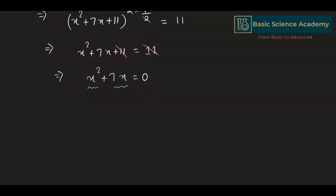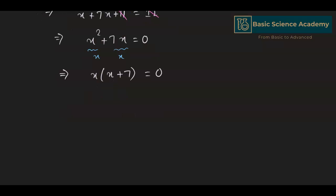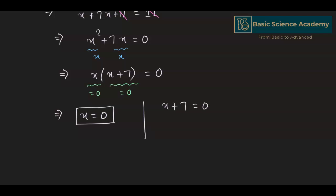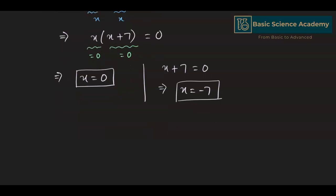Both x² and 7x have x in common. Taking x as common factor gives x(x + 7) = 0. Since the right side is 0, either x = 0 or x + 7 = 0. This gives us x = 0 as one solution, and x + 7 = 0 gives x = −7. Hence we have two values: x = 0 and x = −7.